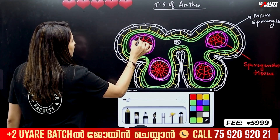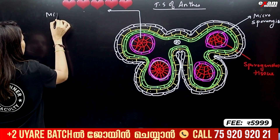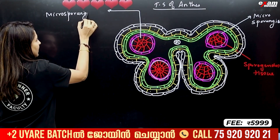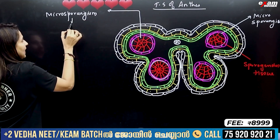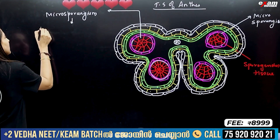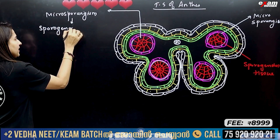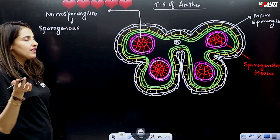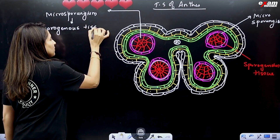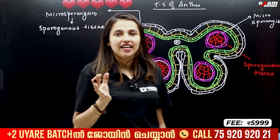We have microsporangia. Microsporangia contains sporogenous tissue. What is the tissue? It is a group of cells.